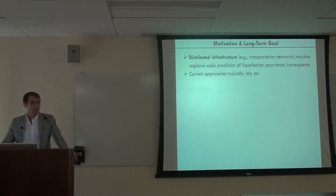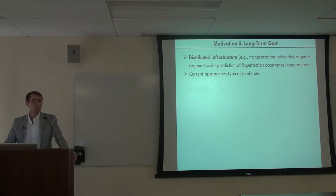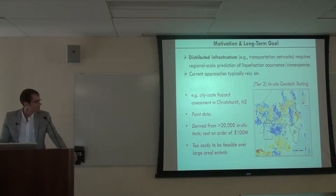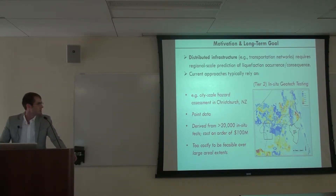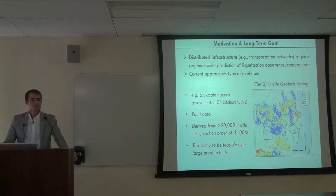For distributed infrastructure or transportation systems, we obviously need regional-scale predictions, and we've seen in recent presentations that numerical modeling in real time may be on the fringe — at least for very select inventories of assets — but we're not there yet with liquefaction. At the moment we rely on two camps. One uses tier-two geotechnical tests: here's a liquefaction prediction from Christchurch, New Zealand — regional scale using CPT point data from over 20,000 tests. That model cost on the order of 100 million dollars to develop, making it economically infeasible outside unique situations.